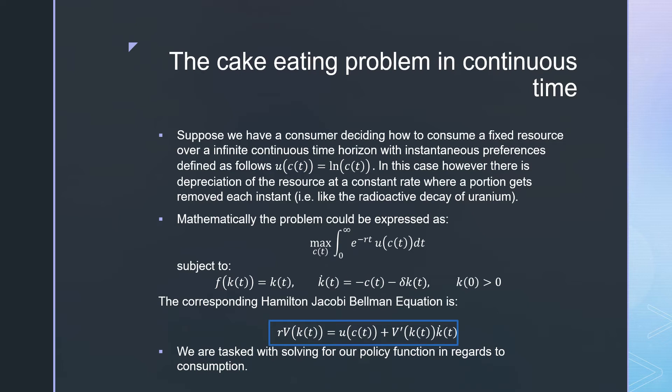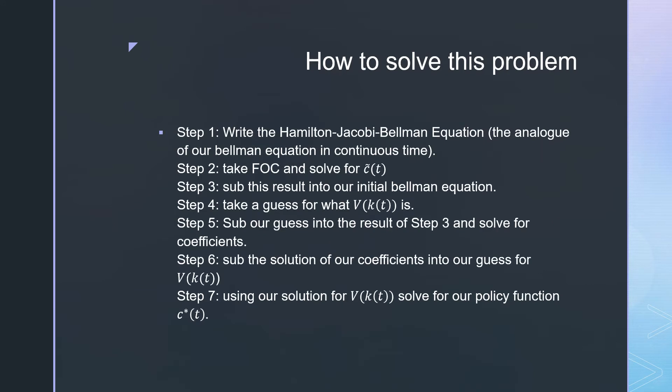The steps for solving this problem are as follows: We're going to write down the Hamilton-Jacobi-Bellman equation, which is just the analog for our regular discrete time Bellman equation in continuous time. We're going to take our first order conditions and solve for this intermediate c_t value.